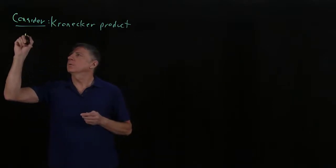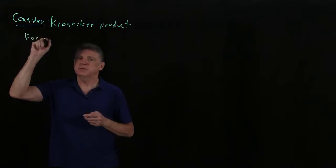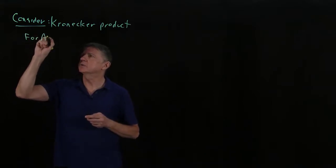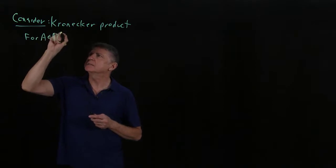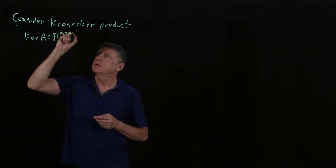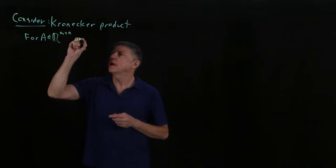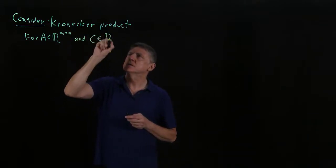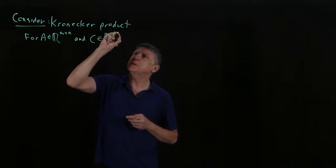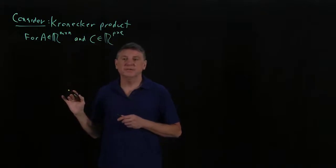Let's suppose we have matrices A and C. Matrix A has M rows and N columns, and matrix C has P rows and Q columns, so that we're keeping our symbols very distinct.